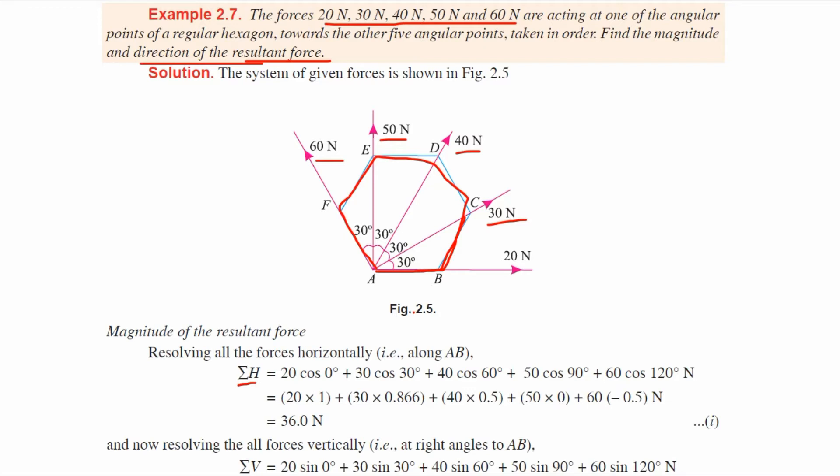Resolving all the forces horizontally along AB: Sigma H equals 20 cos theta, which is cos 0 degrees because A to B is 0 degrees, plus 30 cos 30 degrees, plus 40 cos 60 degrees, plus 50 cos 90 degrees, plus 60 cos 120 degrees Newton.